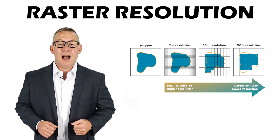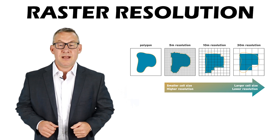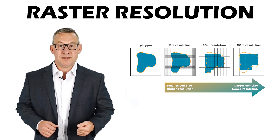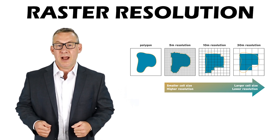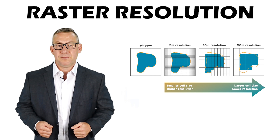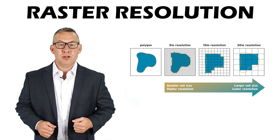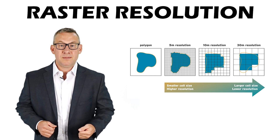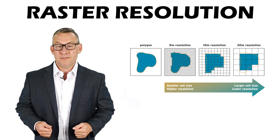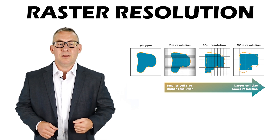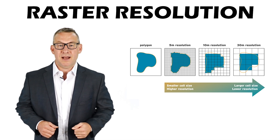Higher raster resolution causes a smaller cell size, higher accuracy, slower display speed, slower processing speed, and a larger file size.